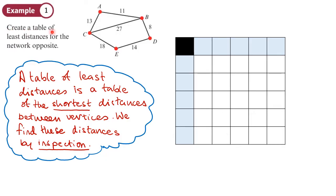In this example, we need to create a table of least distances for the network shown. A table of least distances is slightly different to a distance table — it is a table of the shortest distances between vertices, found by inspection. For example, the least distance between vertex B and C is not the direct 27; instead it would be 11 plus 13, which is 24. So we put the vertices A, B, C, D, and E along the top and the side of our table.